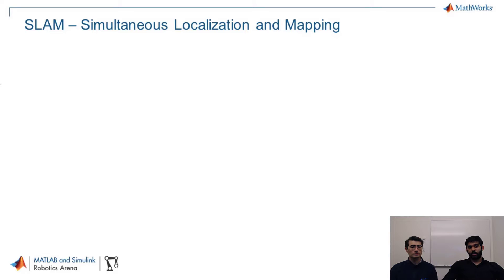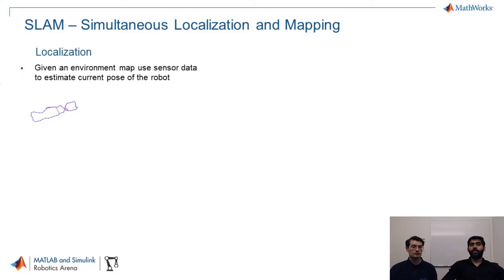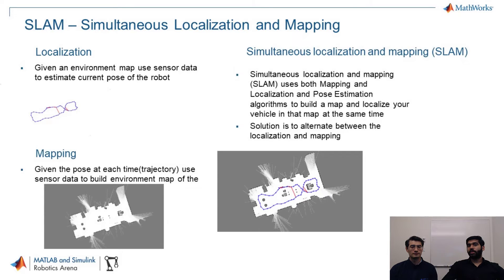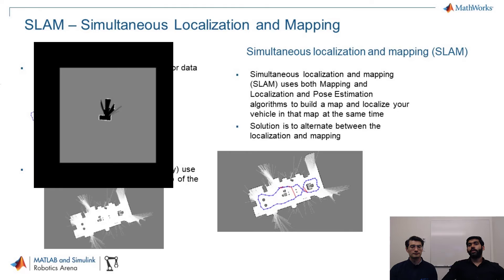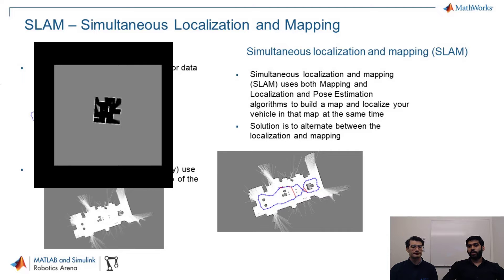Let's take a quick look at the components of SLAM. SLAM stands for Simultaneous Localization and Mapping. In localization, you are given the map of the environment and use onboard sensor data to estimate your robot's pose. In mapping, you are given the robot's trajectory and build a map using sensor data. In SLAM, you perform both operations simultaneously, alternating between localization and mapping.